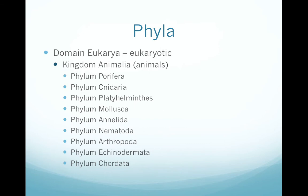Within Kingdom Animalia there are many different phyla. The most well-described ones are listed in your textbook. Most of the phyla are invertebrates, which are organisms that don't have a backbone or spine. Phylum Chordata is made up of the chordates — organisms that do have a spinal cord encased within a bony backbone. You should be able to match the phylum names with descriptions or examples, and know which phyla fall under which kingdom.